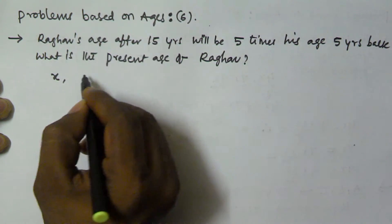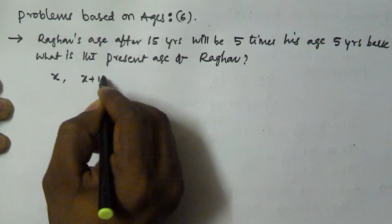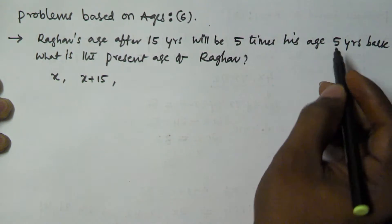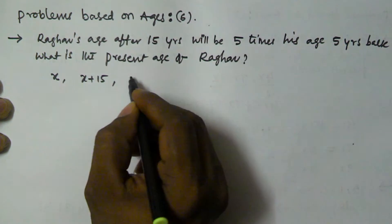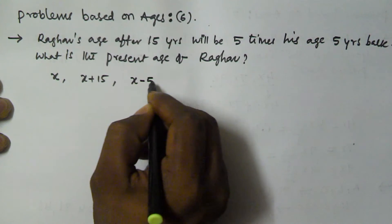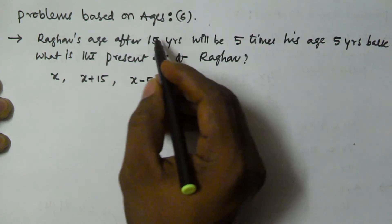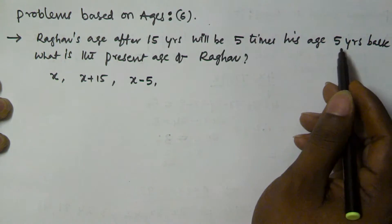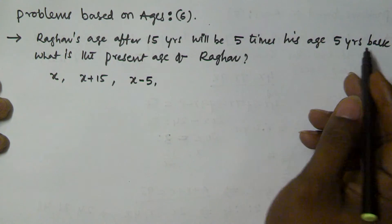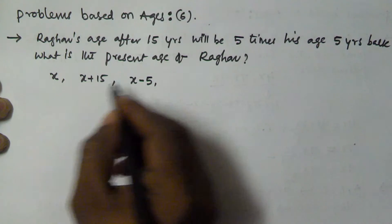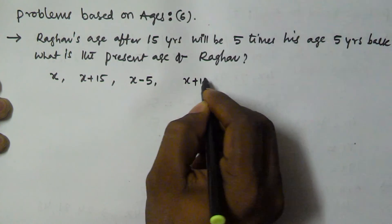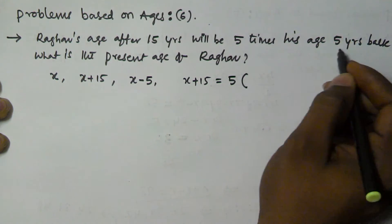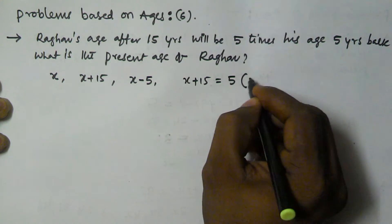Rago's age after 15 years will be x plus 15. Five times his age 5 years back — 5 years back, Rago's age is x minus 5. So the equation is: after 15 years will be 5 times the age of 5 years back. That means x plus 15 is going to be equal to 5 times of his age 5 years back, that is x minus 5.